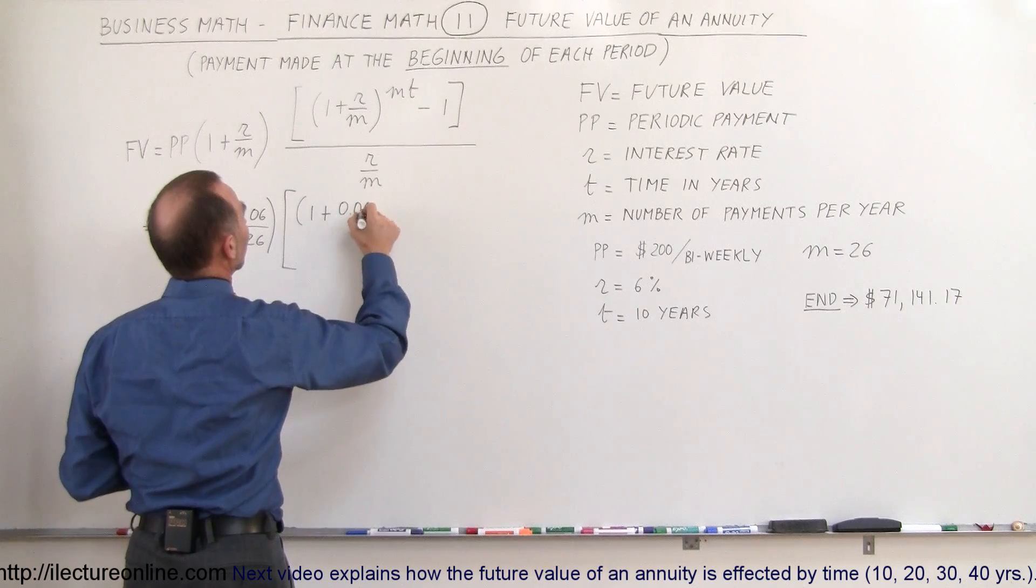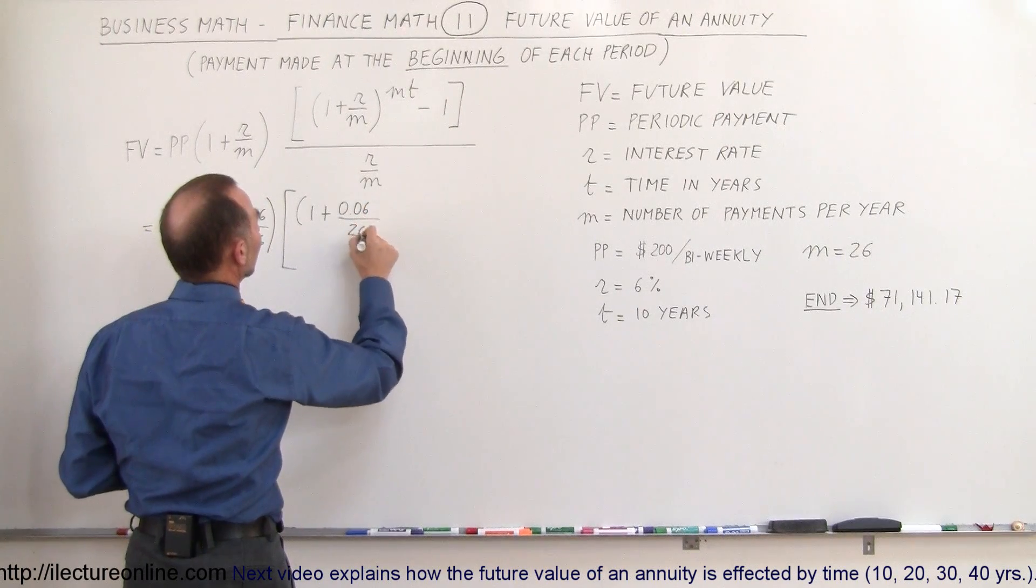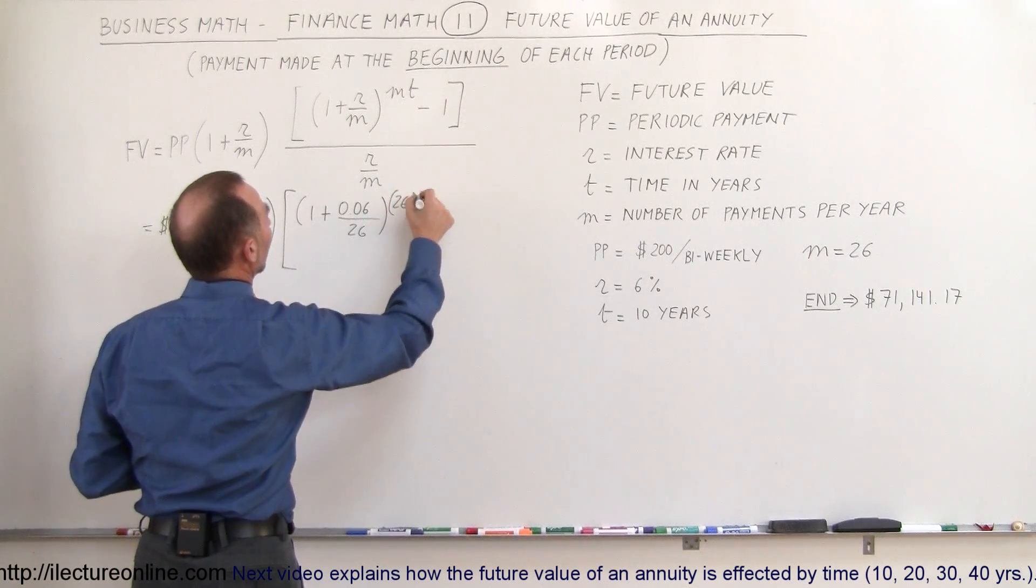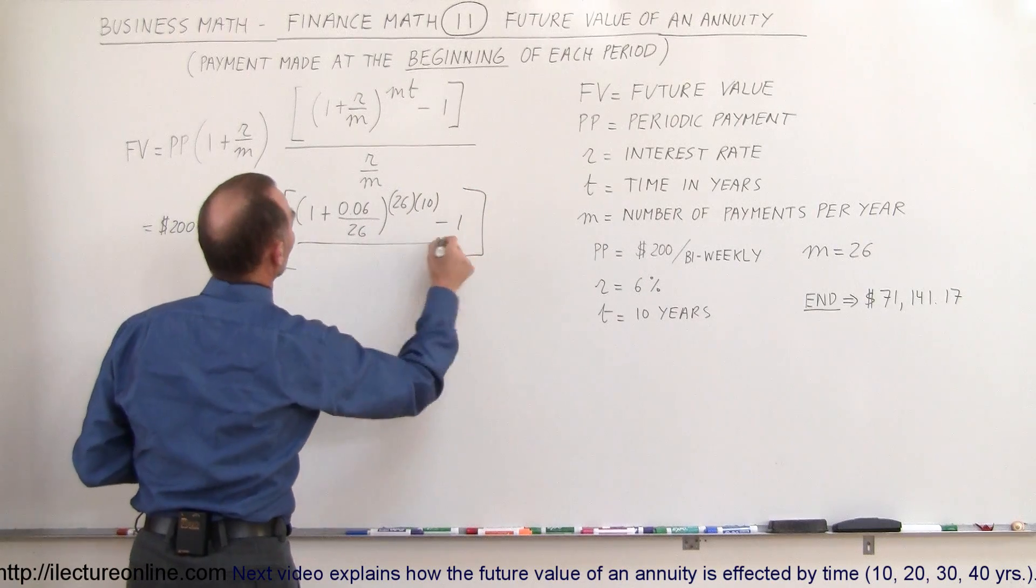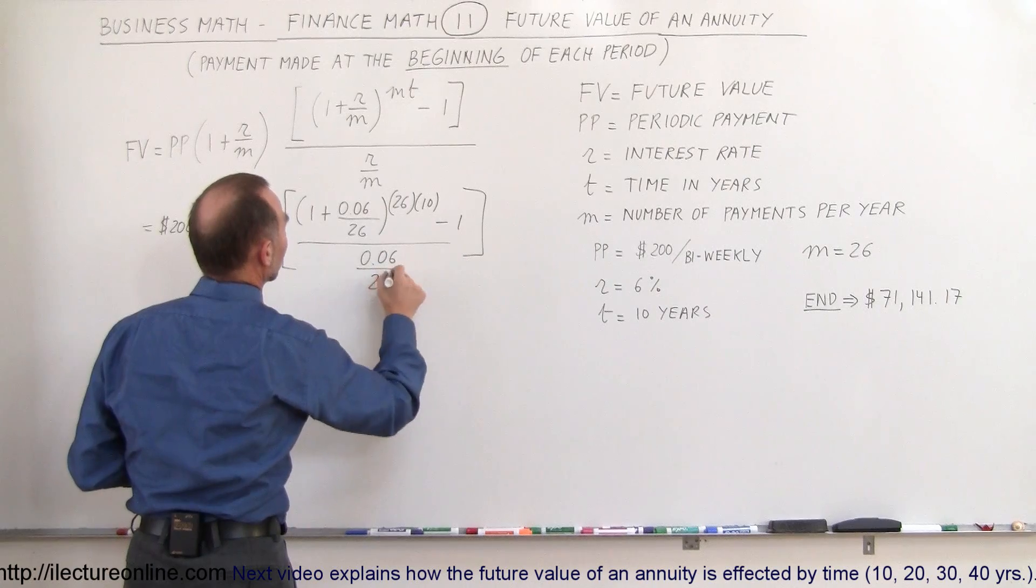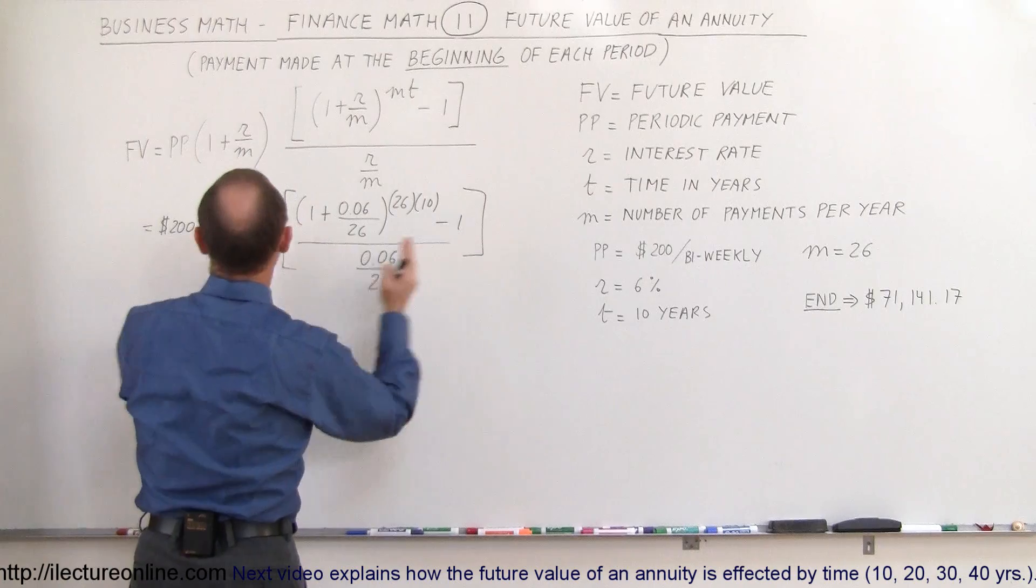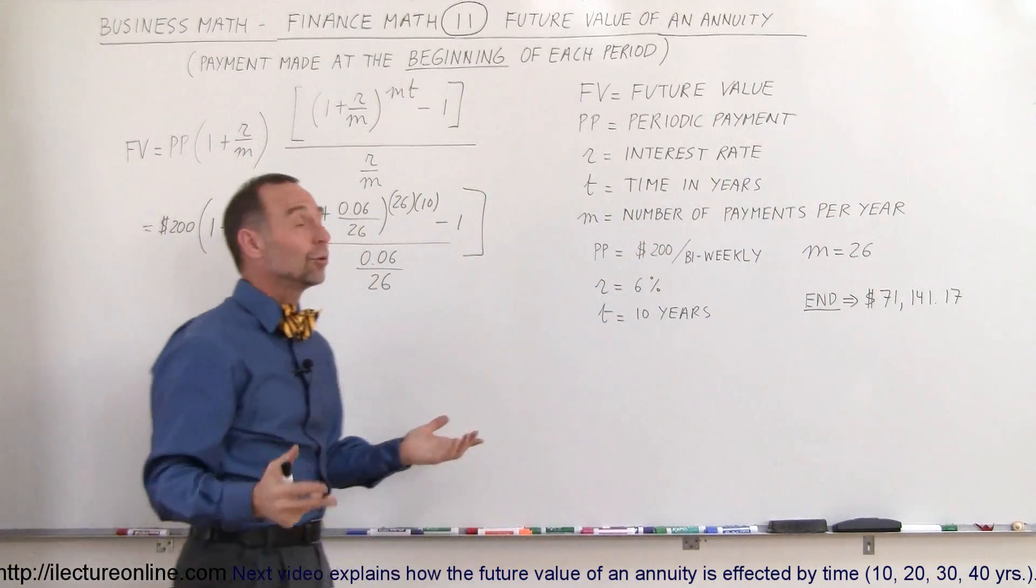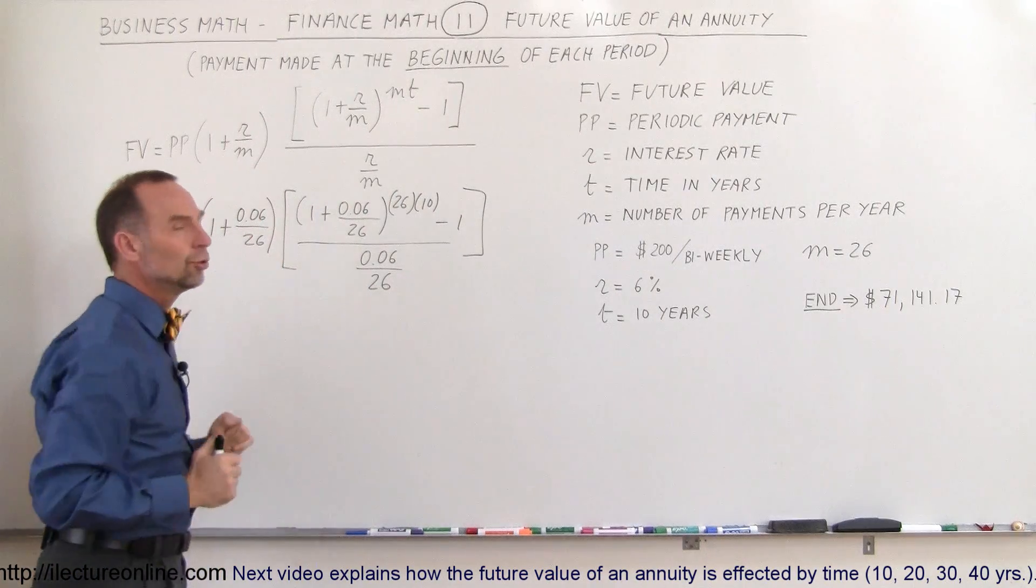R would be 0.06 divided by M. M would be 26. We raise the whole thing to the 26 times 10 power. We subtract 1 from that. And then we divide the whole thing by 0.06 divided by 26. Now remember that in the previous video, this whole thing right here times 200 gave us this number right there.